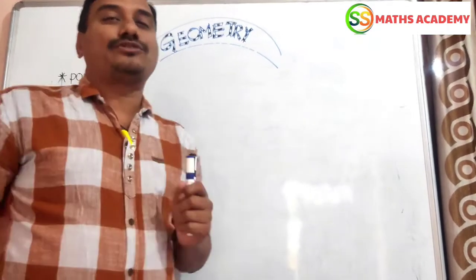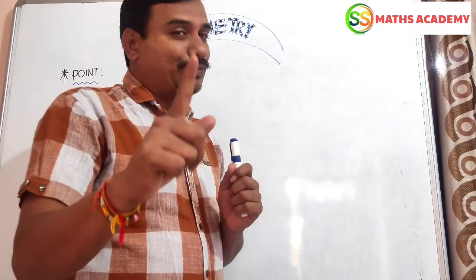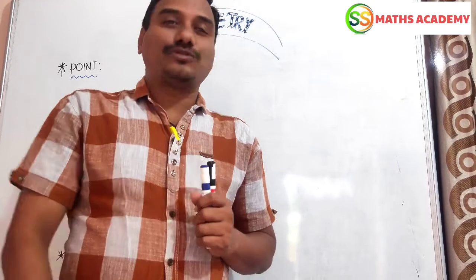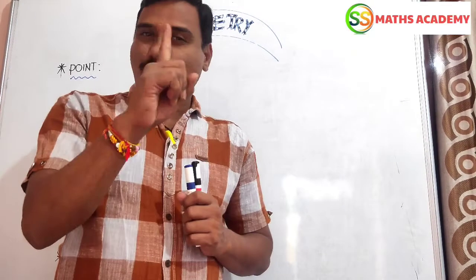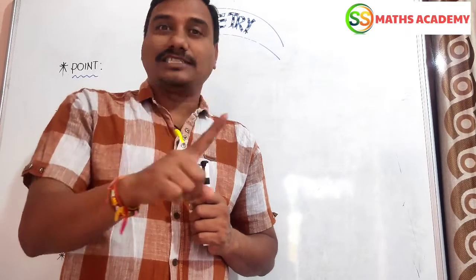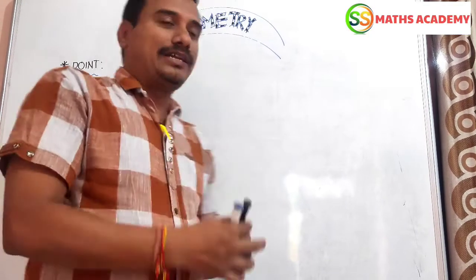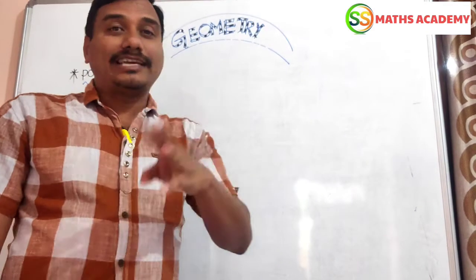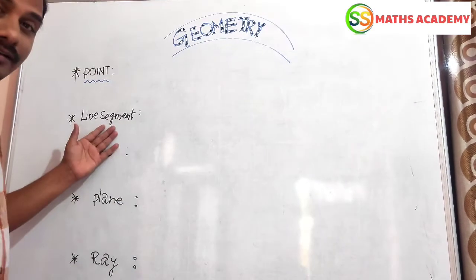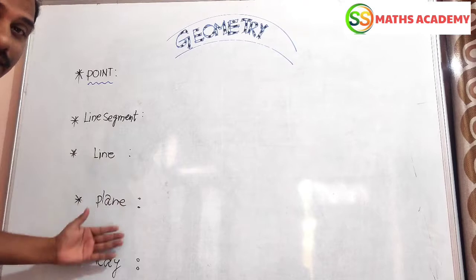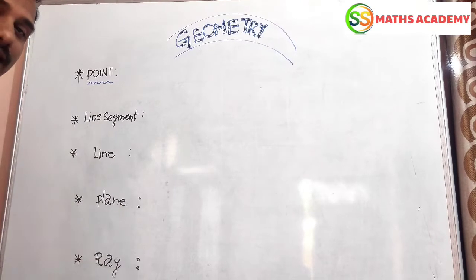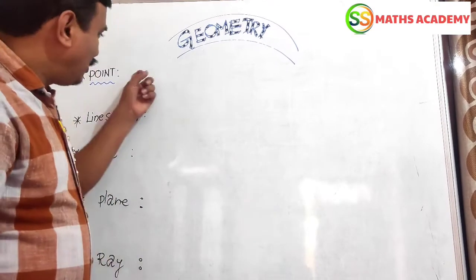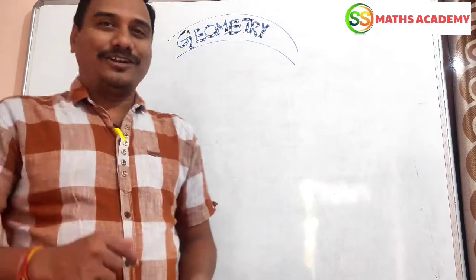Now let us discuss some basic concepts of geometry which are helpful for you. What are the four main basic concepts of geometry? The first one is point. Next, line segment. Then ray. And line. These are the four basic concepts we are going to discuss today.